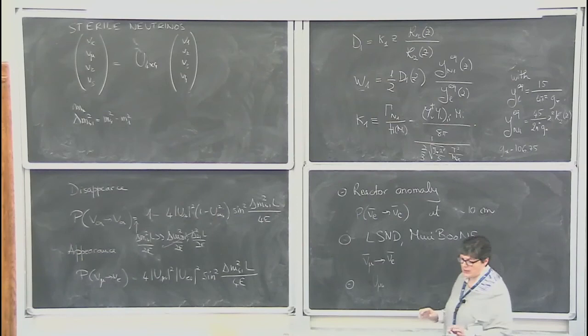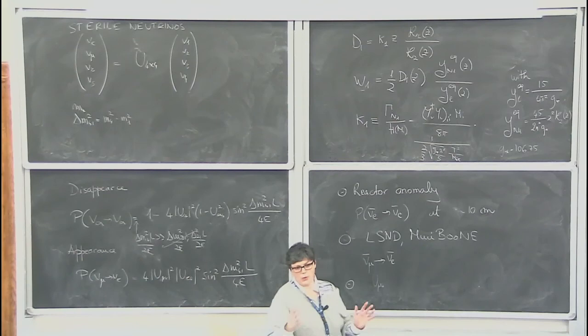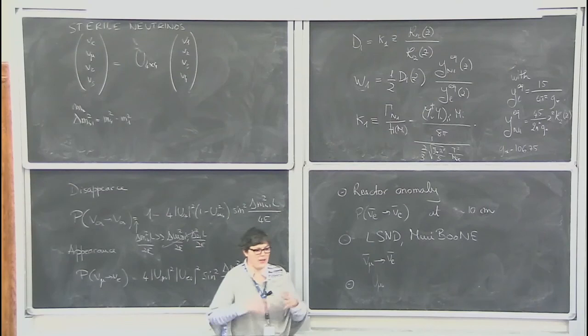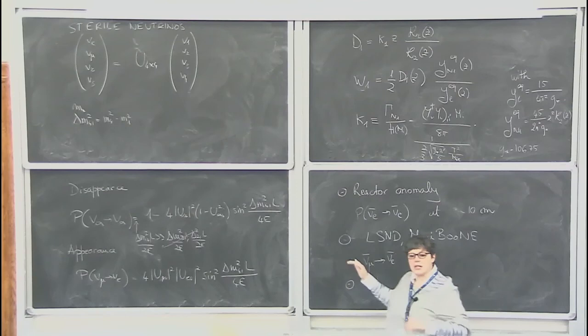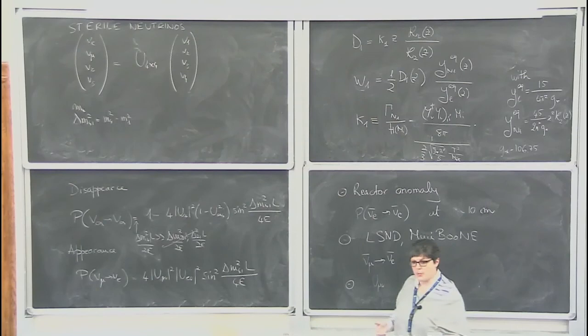If sterile neutrinos are observed, it would be a game changer: neutrino mass models would need to be revised, the flavour structure reconsidered, and cosmology would change significantly since eV-scale sterile neutrinos would have been in thermal equilibrium in the early universe, contributing substantially to hot dark matter and being in tension with cosmological bounds. Either their production in the early universe must be suppressed, or a mechanism to dilute them must be invoked.